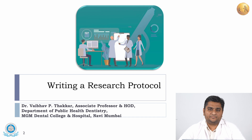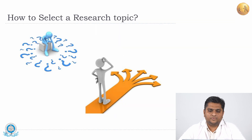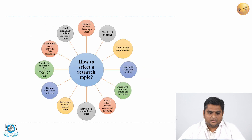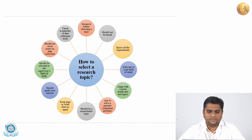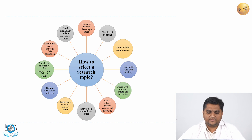Before we go to the steps of writing a research protocol, I would like to talk a little bit about how to select a research topic. There are many factors that will determine which topic you are going to do the research on. We need to do some background search about the topic we are looking for. The topic should not be very broad, we should know all the requirements, it should be relevant to the field of our study, align with current trends and hot topics, and aim to solve a genuine contextual problem.